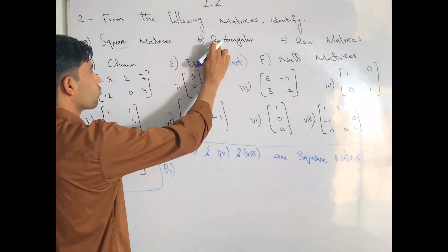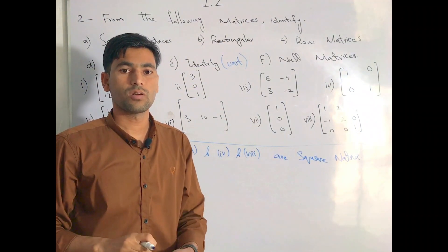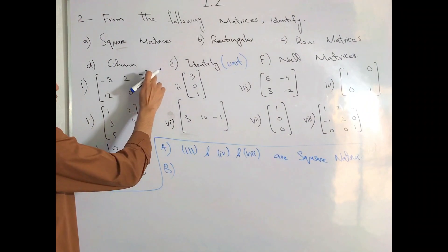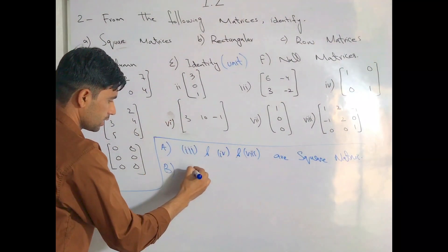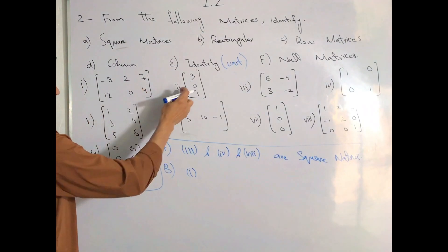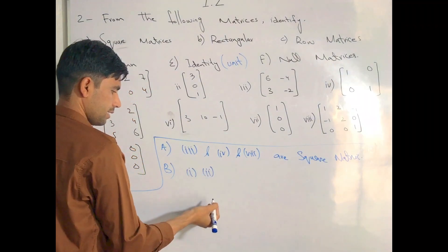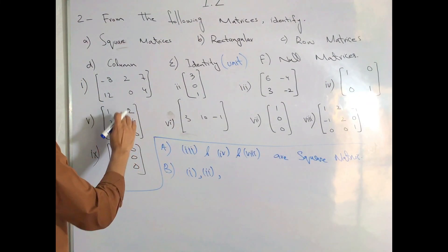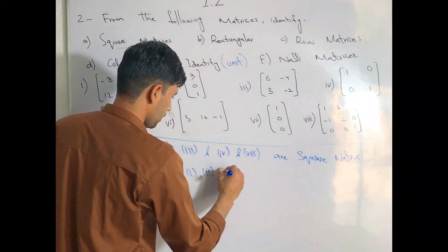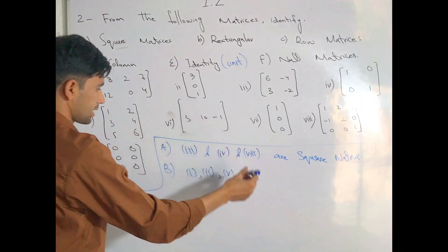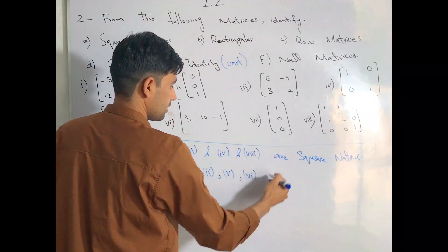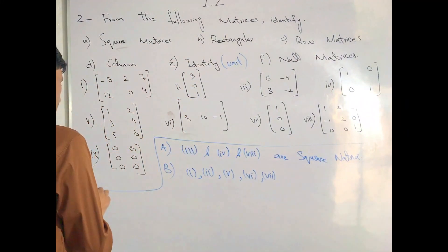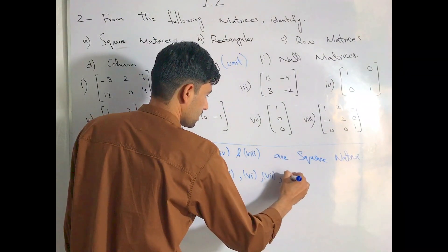For part 2 — rectangular matrices — the number of rows and columns are not the same. Here we can see 2 rows and 3 columns, and another example with 3 rows and 2 columns. These are rectangular matrices.